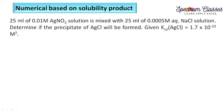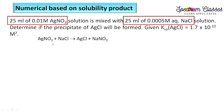The next numerical is also very important and a little tricky. 25 mL of 0.01 molar silver nitrate solution is mixed with 25 mL of 0.0005 molar NaCl solution. Determine if a precipitate of silver chloride will form. Ksp for AgCl is given. The reaction is: AgNO₃ + NaCl → AgCl (white precipitate) + NaNO₃. AgCl is a white ppt while the other three are soluble.